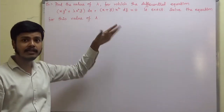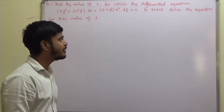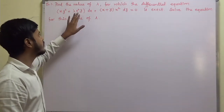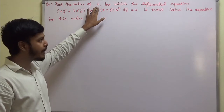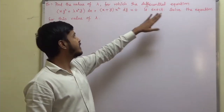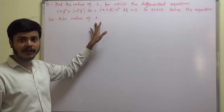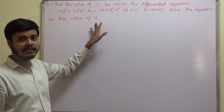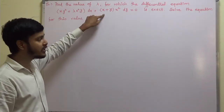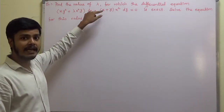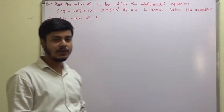So, finding del M by del y equal to del N by del x — that condition we can make use of. With the help of that we have to find out the value of this unknown lambda first, and then solve the equation for this value of lambda. Whatever value of lambda we get, we put it in this equation, and as this equation is exact we can easily find out its solution.